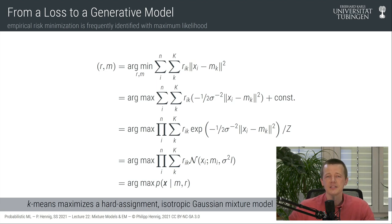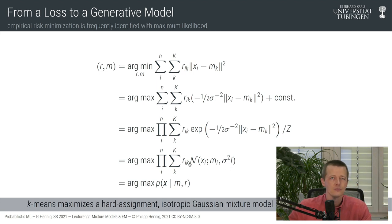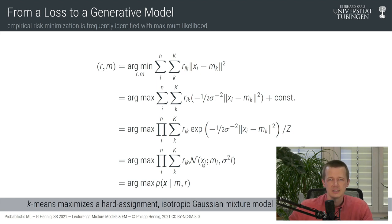Starting with the shape issue: to allow each cluster to have a different shape, we could change this base measure — the Gaussian assumption — or, more simply, allow the Gaussian clusters to stay Gaussian but have a more general covariance matrix: a symmetric positive definite matrix called sigma. This replaces the scalar isotropic assumption with a full covariance matrix that can capture elongated or rotated cluster shapes.